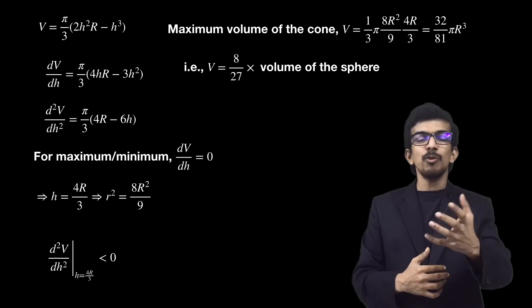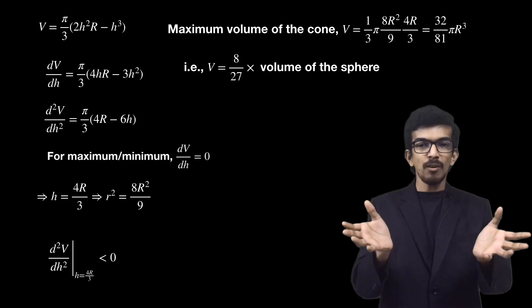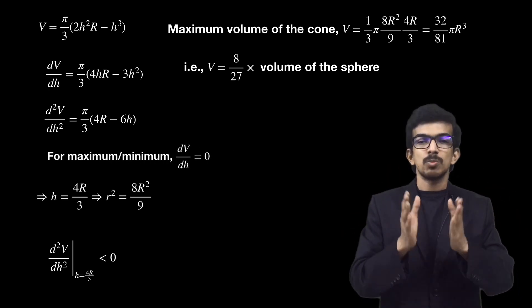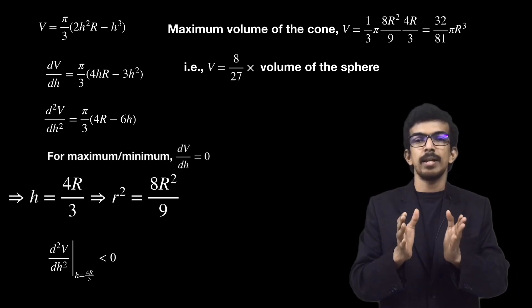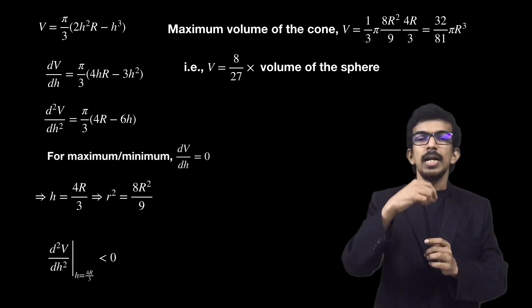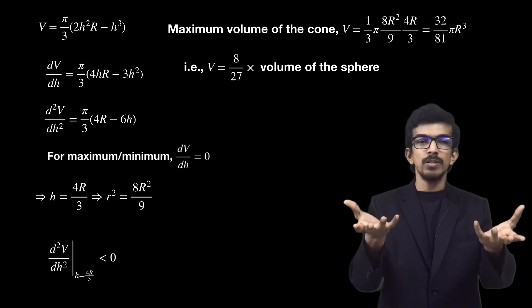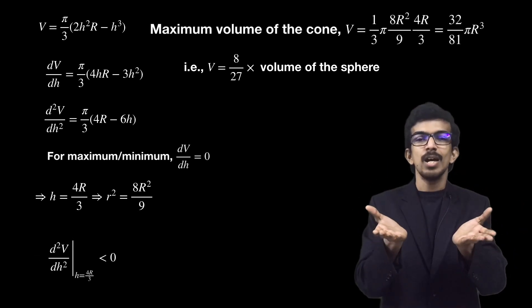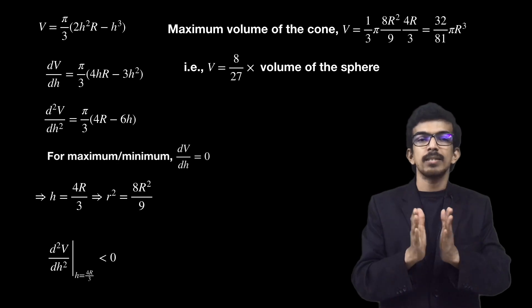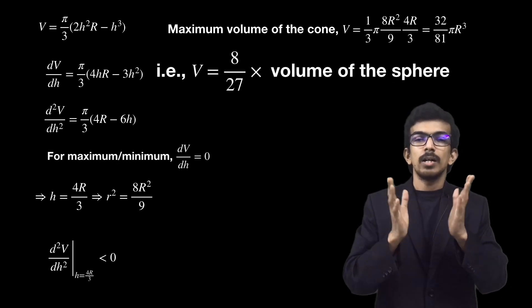For maximum or minimum, we need to have dV/dh = 0. Upon solving this condition, we get h = 4R/3. And you see that at this point, the double derivative is less than 0. Now substitute this in the volume of the cone, and we get volume of the cone as 8/27 times the volume of the sphere.